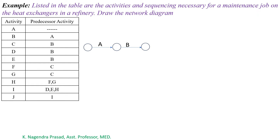Next, observe activities C, D, and E. For these activities, B is the predecessor activity, which means after completion of B, C, D, and E will start. So draw the activities C, D, and E.